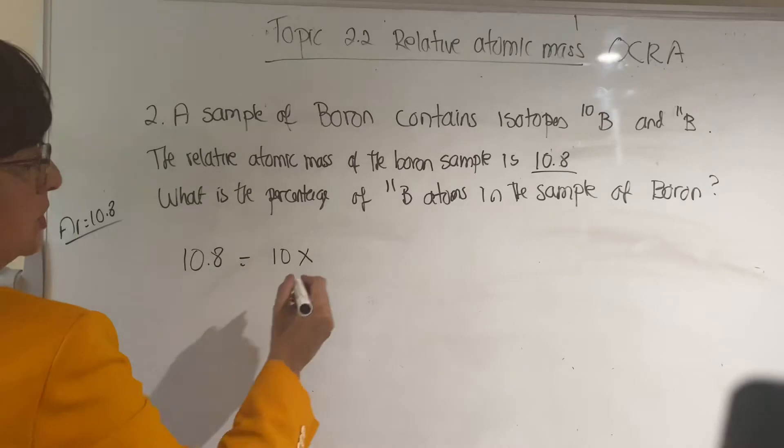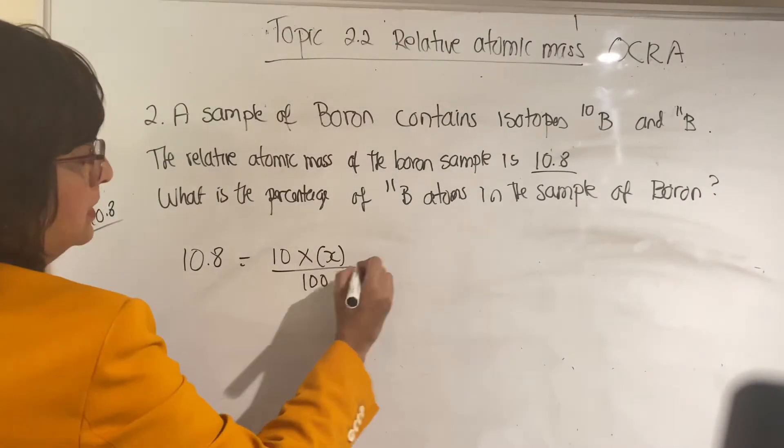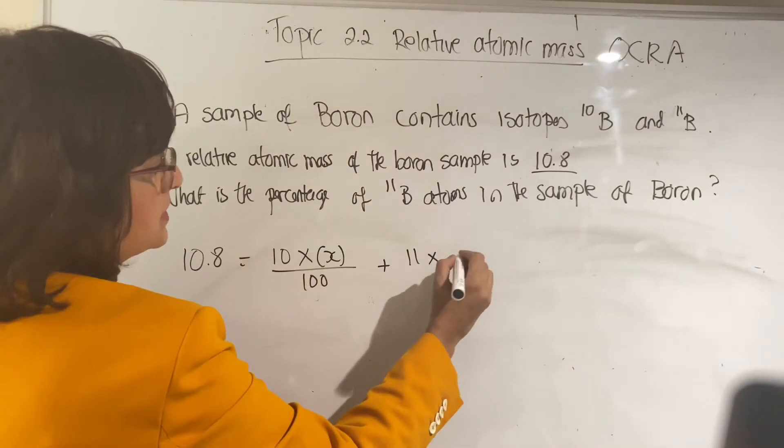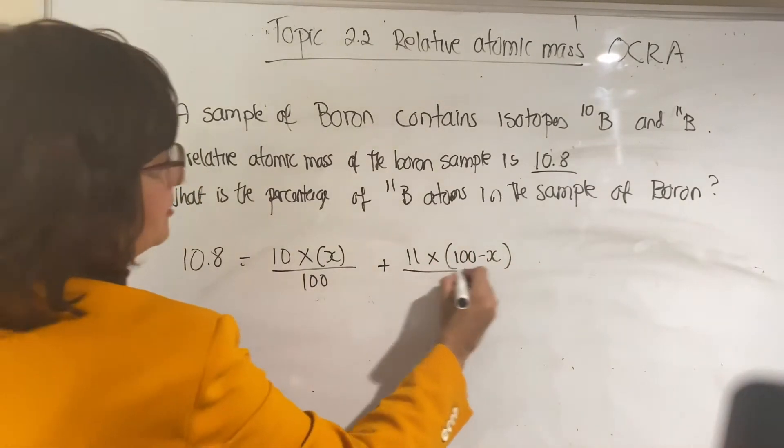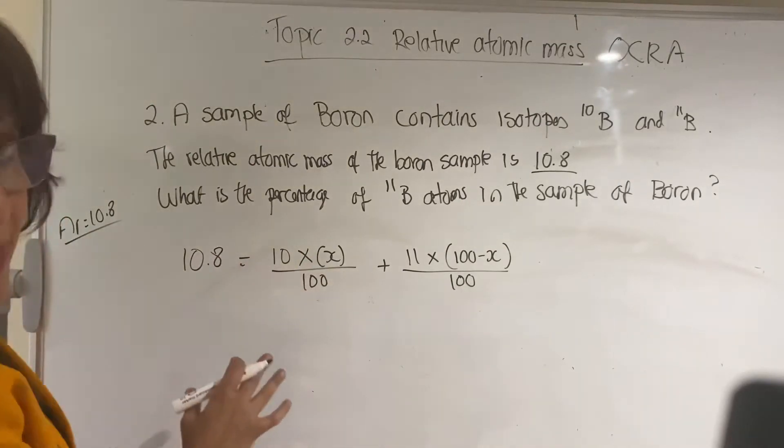You don't know the percentage, so 10 times x divided by 100, plus then you've got 11 times 100 minus x, divided by 100.